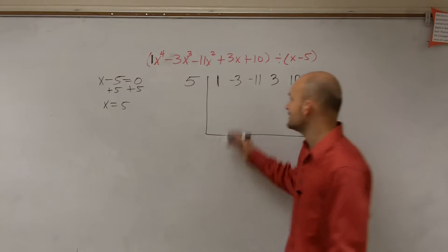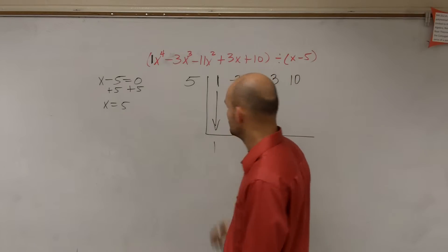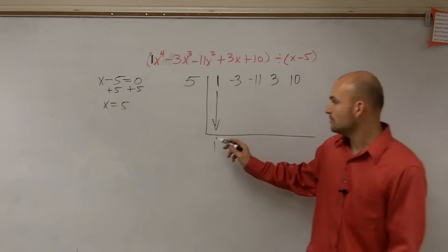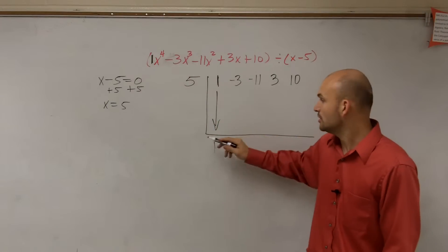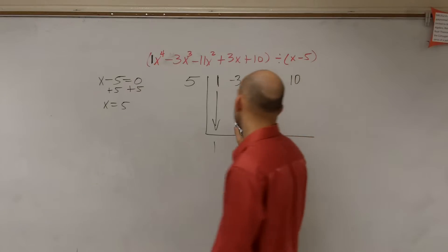So the first thing you guys do is remember, the first one's a freebie. Just bring it down to the front. Then when you work diagonally, you multiply. 1 times 5 is 5.